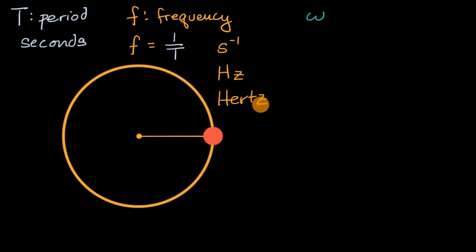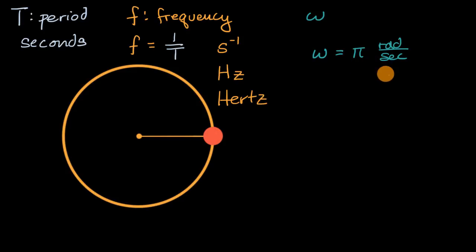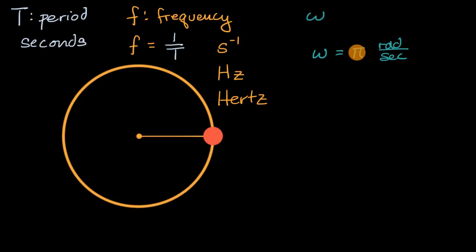With that out of the way, let's connect these ideas to the magnitude of angular velocity. Let's say the magnitude of our angular velocity is pi radians per second. If we knew that, what is the period going to be? This ball is going to move through pi radians every second. So how long is it going to take to complete two pi radians? Remember, one complete rotation is two pi radians. If it's going pi radians per second, it's going to take two seconds to go two pi radians. So the period here is going to be equal to two seconds.